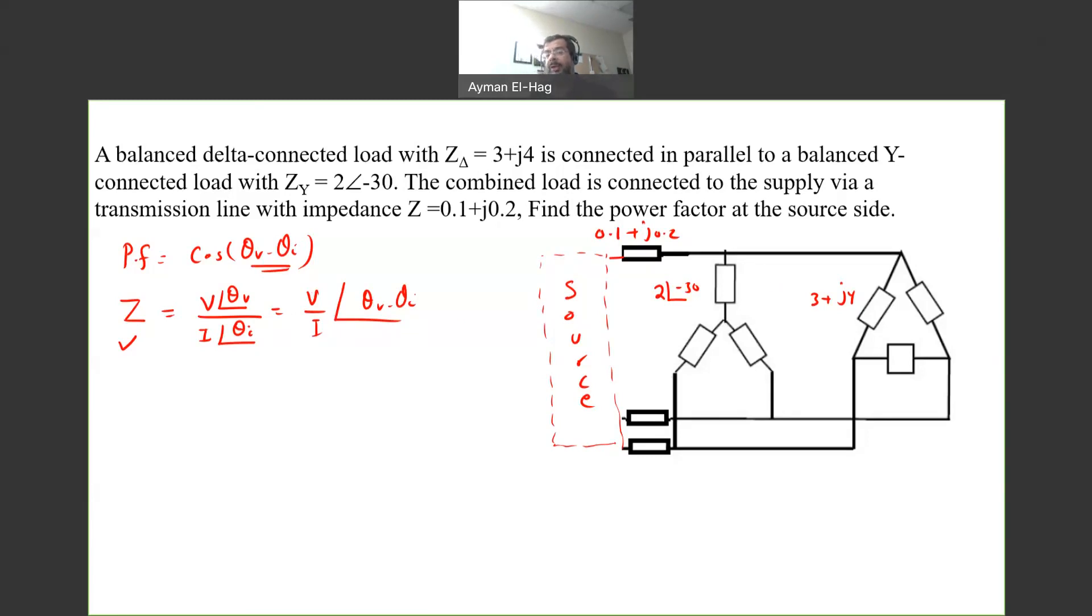Now we need to convert the circuit into a single phase circuit. So I need to convert this into Y connection. To do that, we need to divide this by 3. So this becomes equal to 1 plus j1.33. We have this load in parallel with this, in series with the line impedance. The line is equal to 0.1 plus j0.2, this is equal to 2 angle of minus 30, and this is equal to 1 plus j1.33.